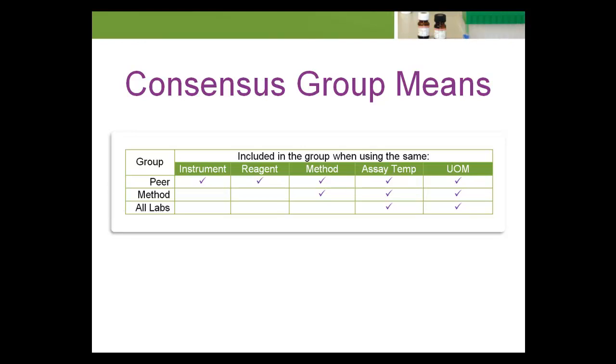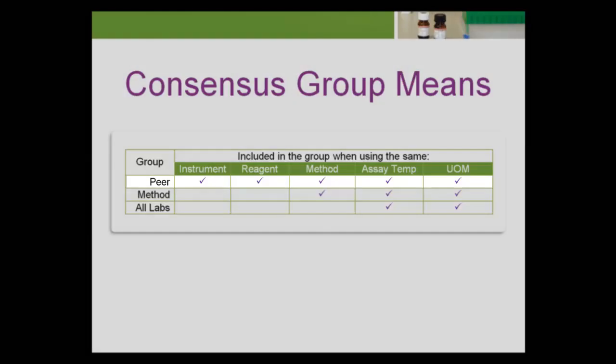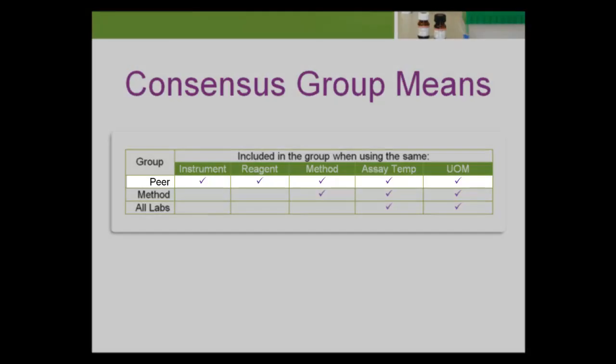The first consensus group, peer, is the ideal and preferred group because its mean is calculated using analyte data from laboratories with the same instrument, method, reagents, temperature, and unit of measure.